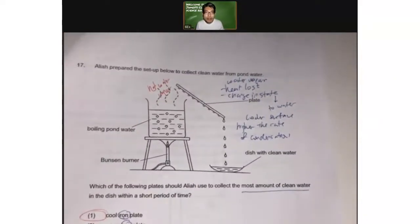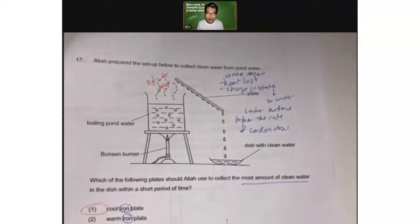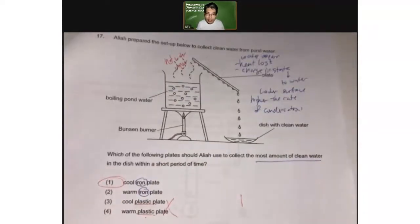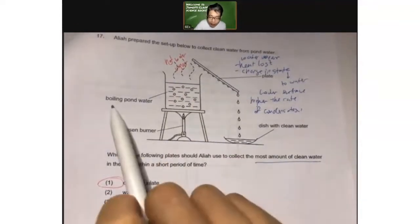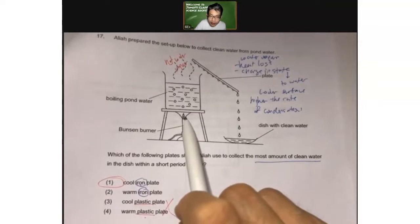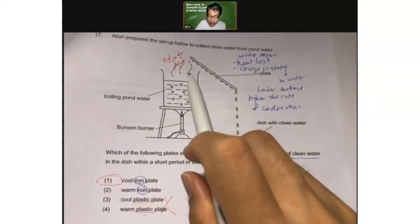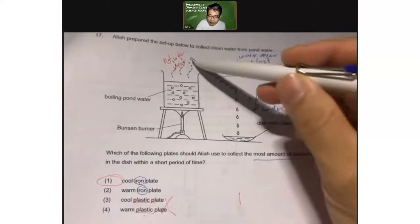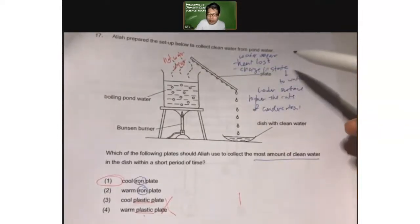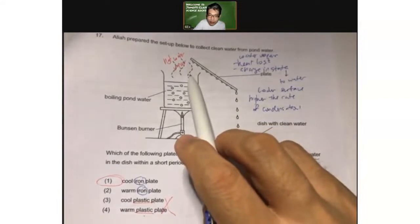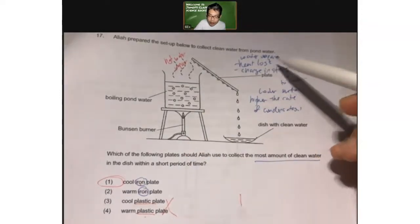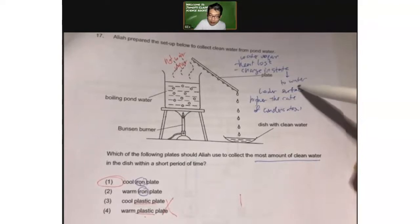Next question. Now Alia prepared the setup shown to collect clean water from the pond water. So there's boiling water. Always want to understand the picture. Don't just go to the words and try to guess the answer. So there's some water here and it's boiling. There's a flame below the heat source. And this is white mist that comes out. If you can see it, then it's mist. If you cannot see, it will be the hot water vapor. Now there's a plate here.